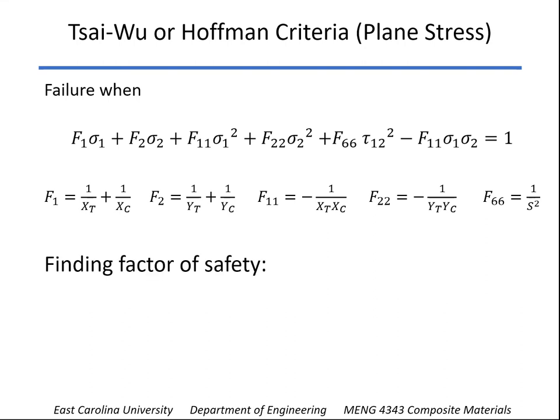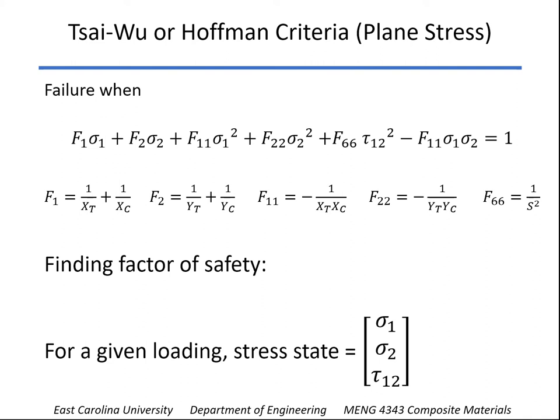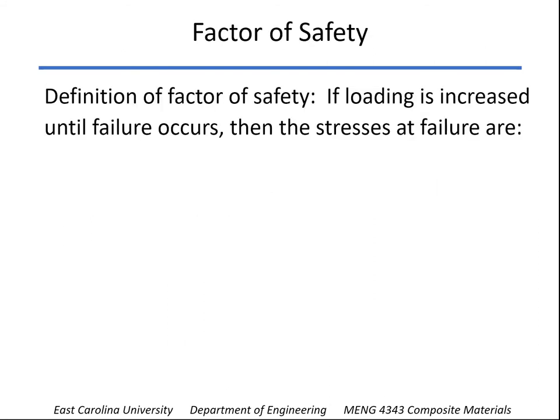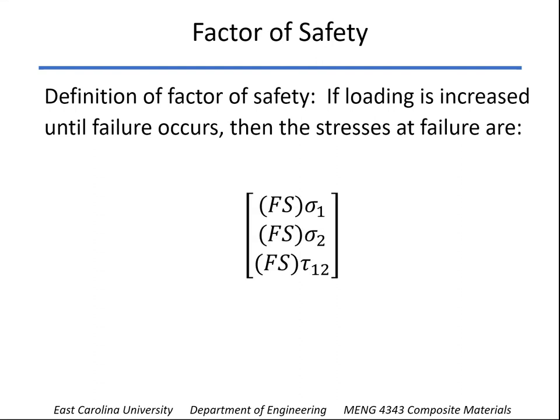Here's how we're going to find the factor of safety. For a given loading we're going to calculate the stress state sigma 1, sigma 2, and tau 1,2 for a state of plane stress. We're going to assume that our definition of the factor of safety is that if we increase the loading until failure occurs, the stresses at failure would be the factor of safety times each of those stresses. This assumes all linear behavior, so if we increase the load by a factor of two, we increase all stresses by a factor of two as well.